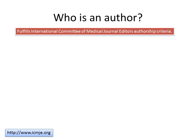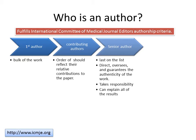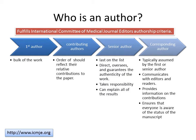Who is an author? The author should fulfill the International Committee of Medical Journal Editors' authorship criteria. The first author is the one that does the bulk of the work. The contributing or middle authors also make major contributions, and their order should reflect their relative contributions to the paper. The senior author goes at the end of the list, directs and oversees and guarantees the authenticity of the work, takes responsibility, and can explain all of the results. The corresponding author is typically the first or senior author, can communicate with editors and readers, provides information about contributions, and ensures that everyone is aware of the submission status, its contents, authorship, and the order of authorships.